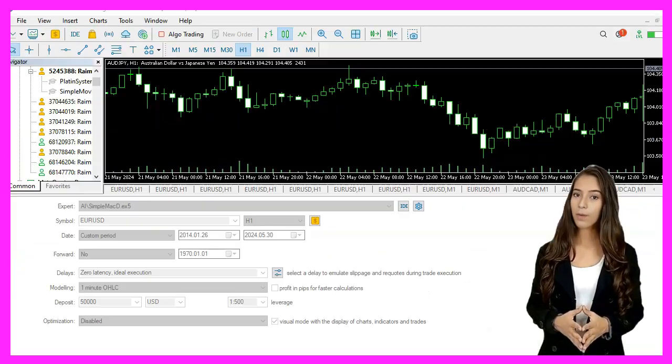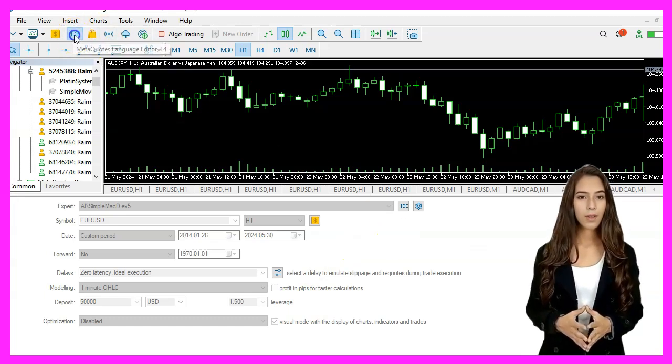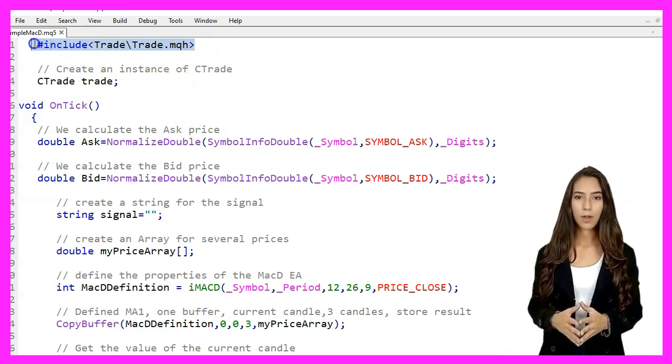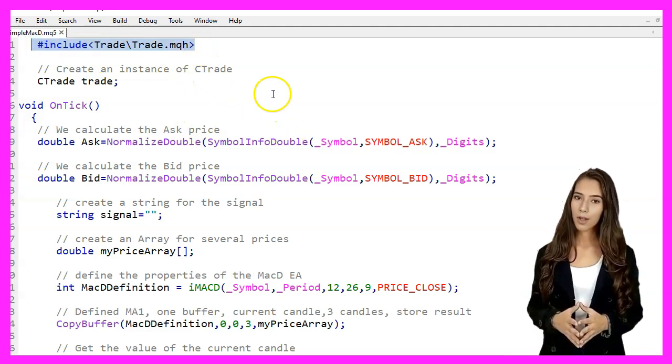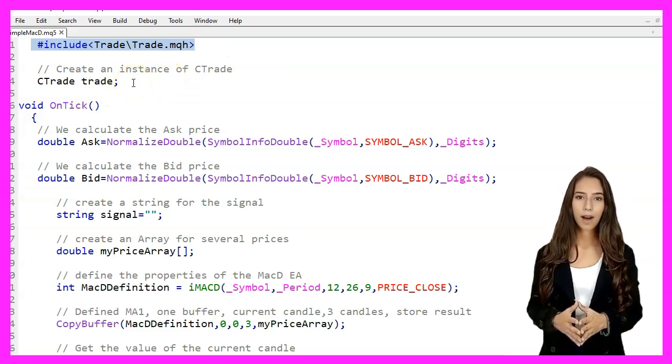We start MetaEditor by clicking the little icon or pressing F4. First, we include the necessary trade library with IncludeTradeTrade.mqh. This allows us to use the trading functions provided by the CTrade class.